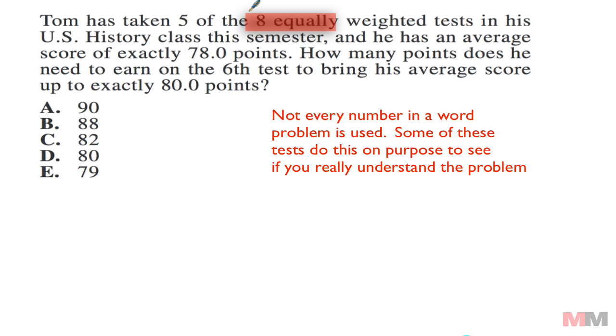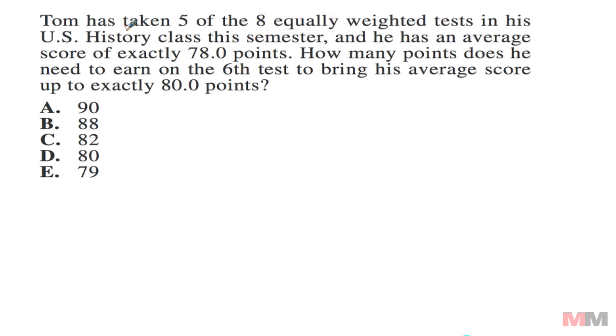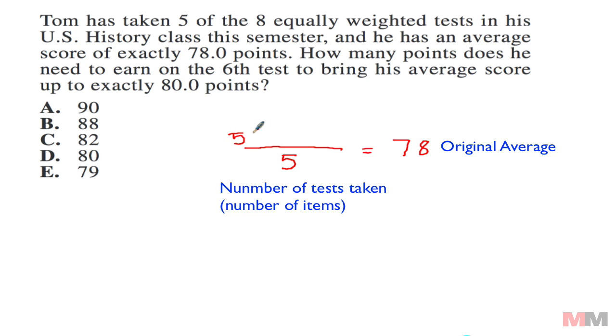Tom has taken five tests and he averaged 78 points, so let's translate that to math. His average is 78. He took five tests, so the number of items on that list is five. If he averaged 78 on five tests, then that's like him scoring 78 five times, so a shorter way to write that is 5 times 78. The question is asking how many points he needs to earn on the sixth test to bring his average score up to 80 points.